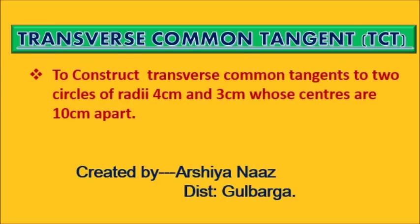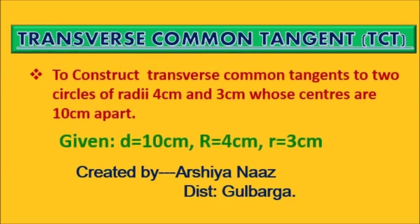first write down the given data. Here, distance between the centers of the circles is d = 10 cm, and the radii are R = 4 cm and r = 3 cm.